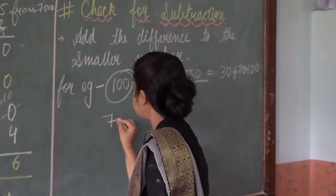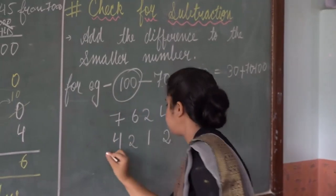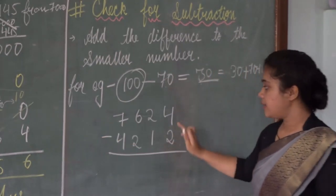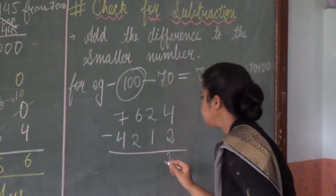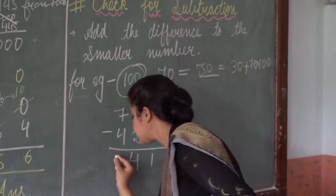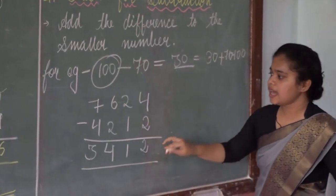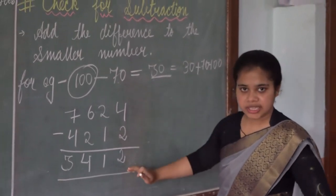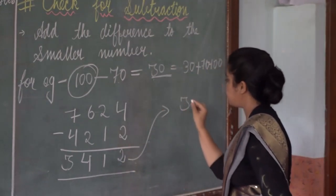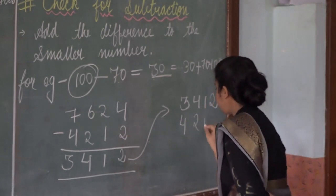Let us take another example. Subtract 4212 from 7624. When we subtract, starting from the ones side: 2 from 4 is 2, then 1 from 2 is 1, then 2 from 6 is 4, then 4 from 7 is 3. The result — the difference — is 3412. The smaller number is 4212.